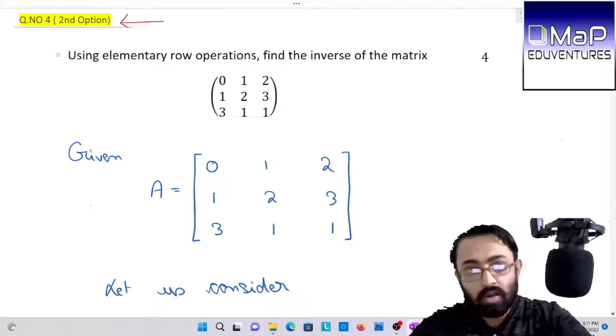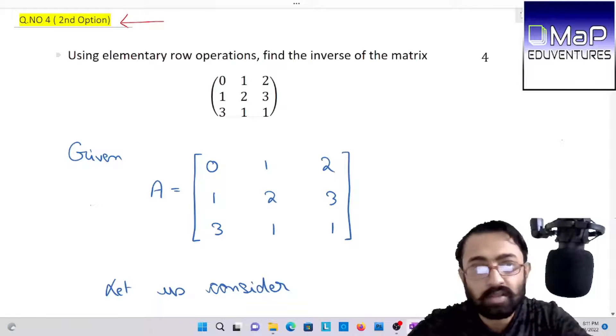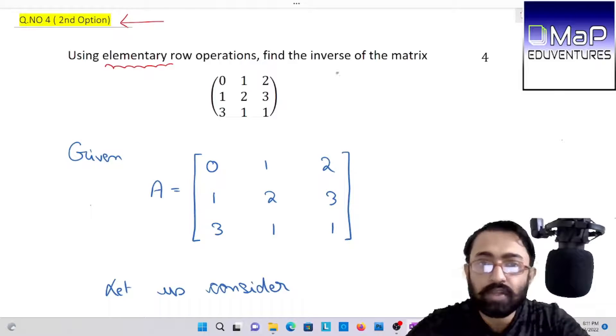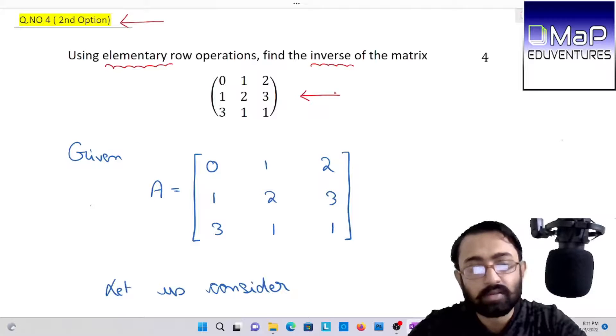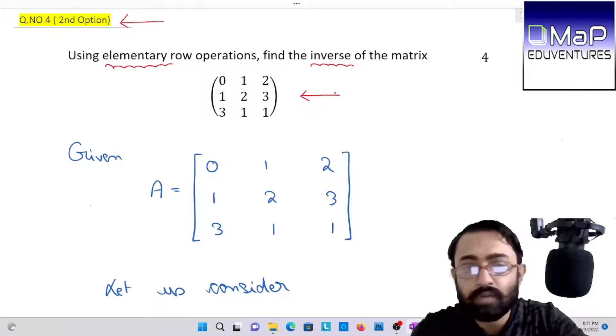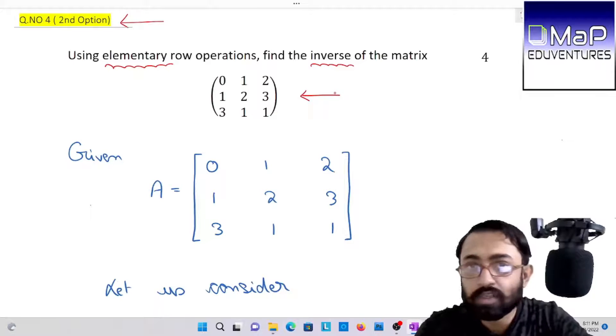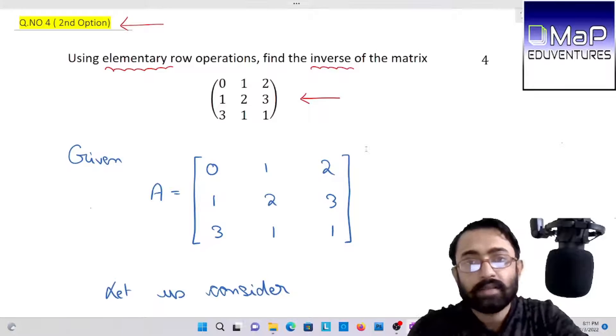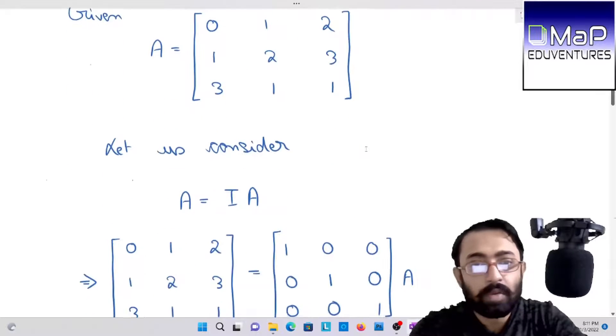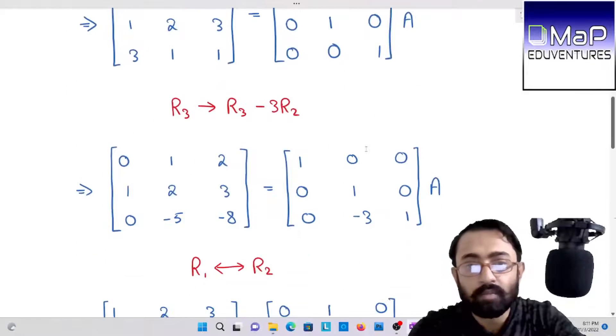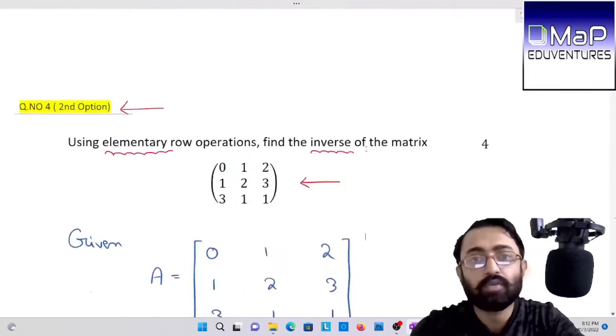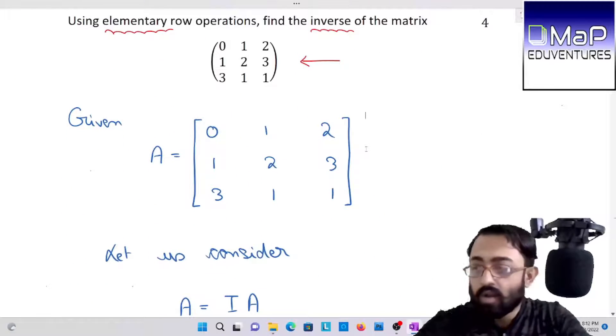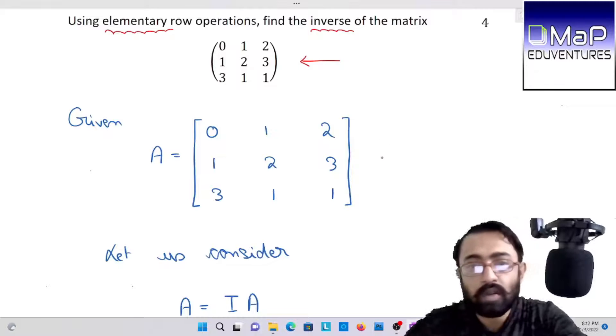We have to find the elementary row operation to find the inverse of A matrix. This is a similar type of question as row operation in 2015. The complete question was already beforehand done by me. It's a similar approach.